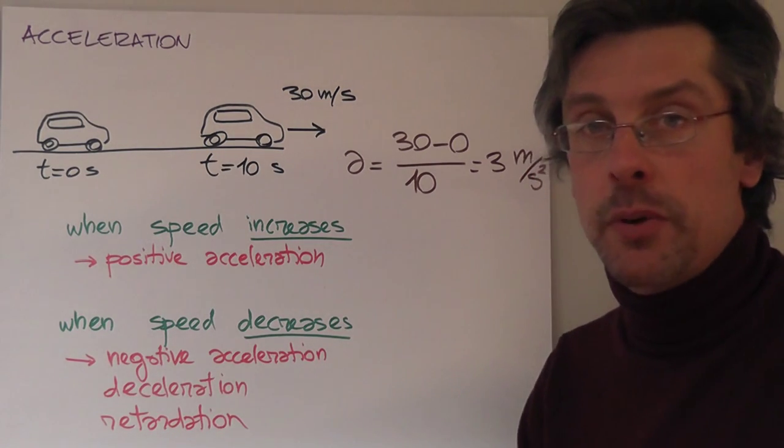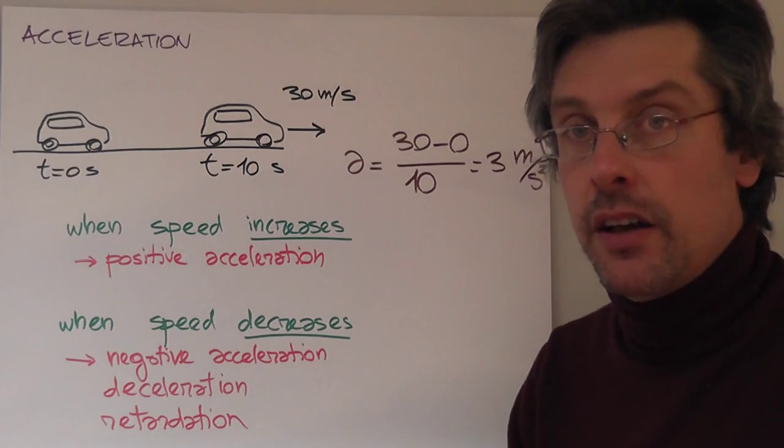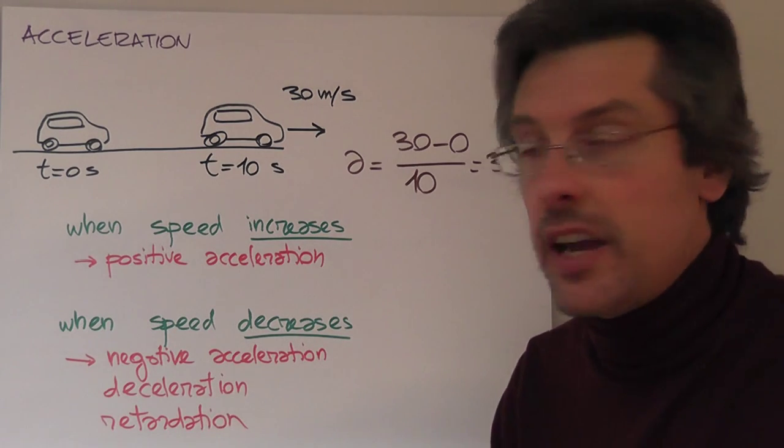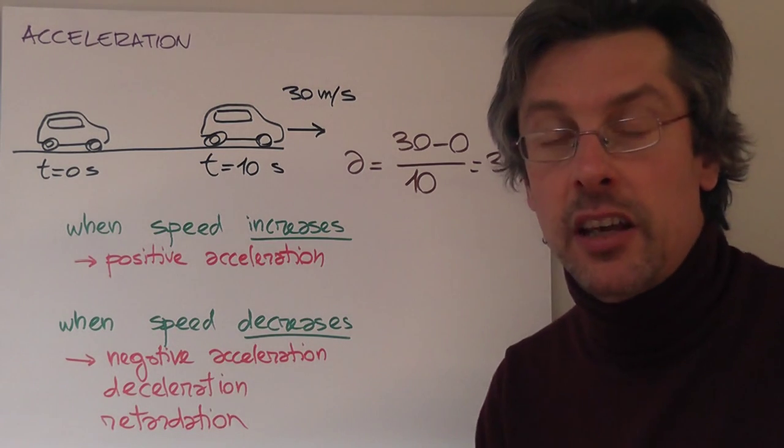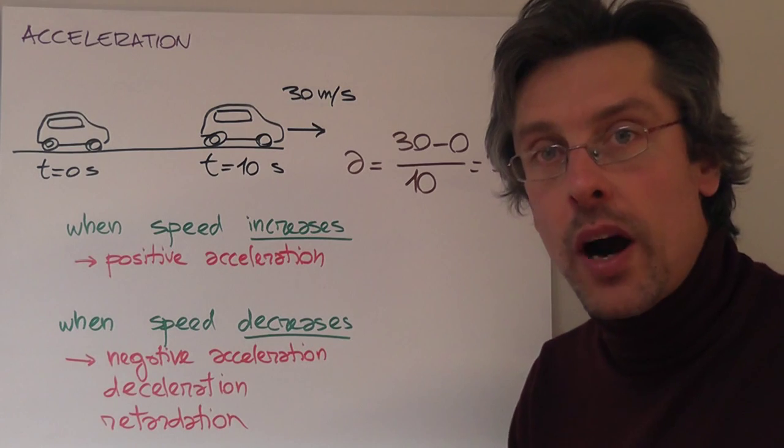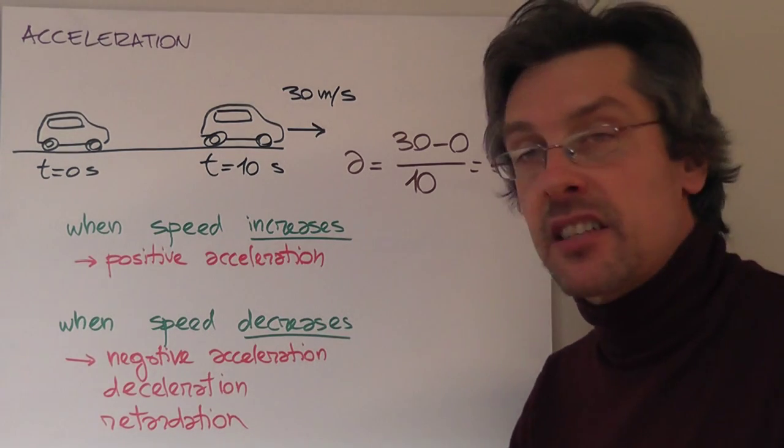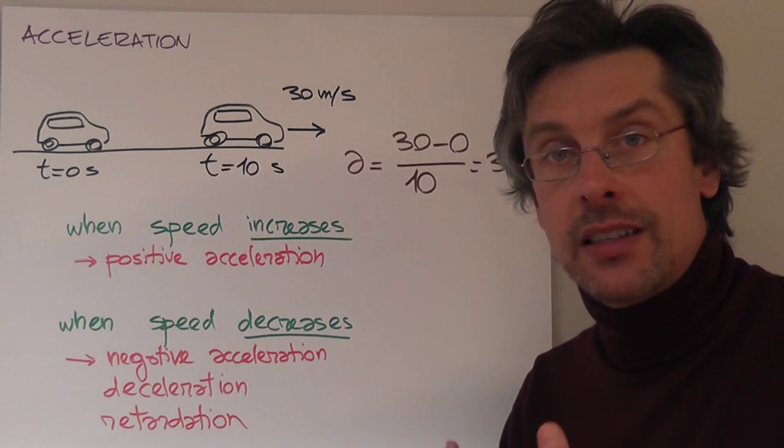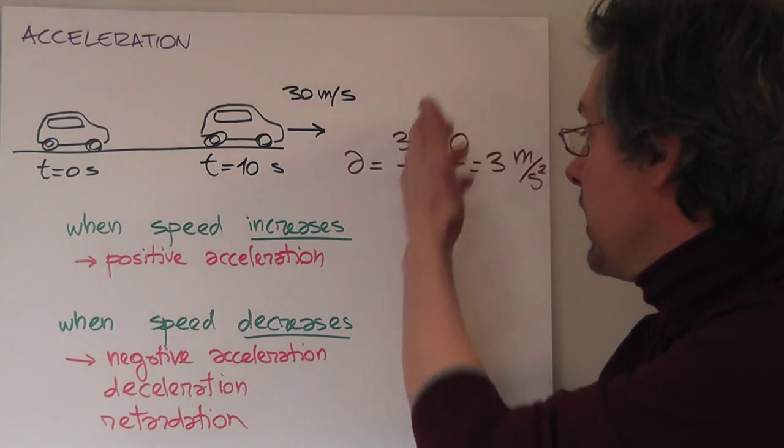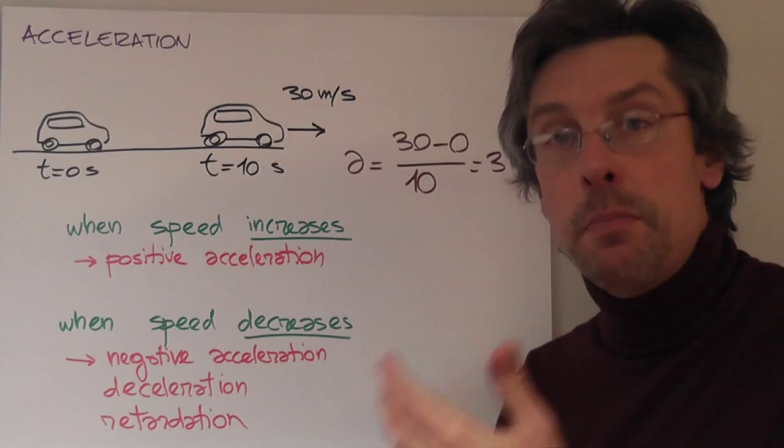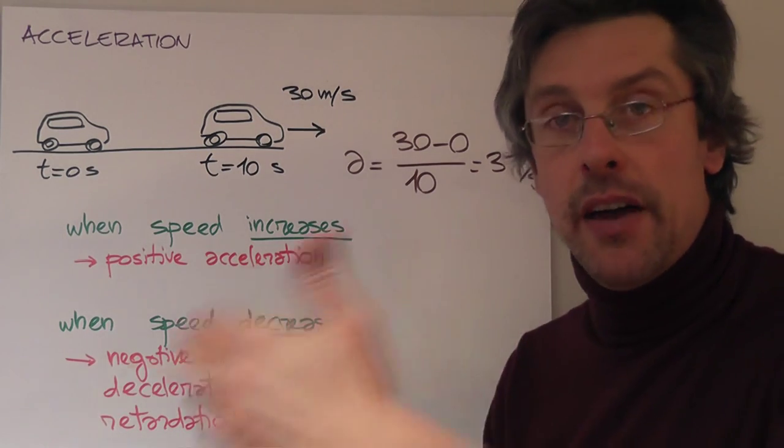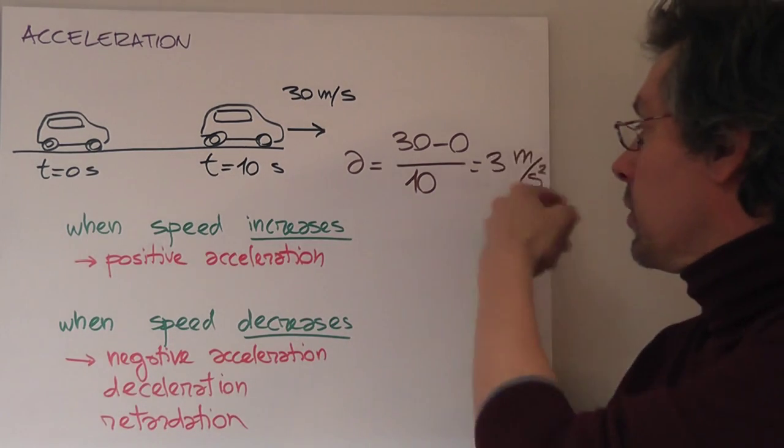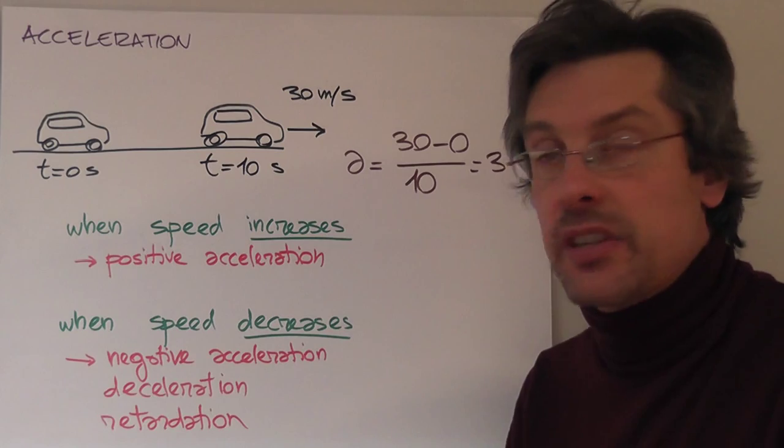And that is very peculiar because we saw that the unit for speed is meters per second. Here we have meters per second squared. And why is that? Because acceleration can be viewed as a rate of change of speed. Or in other words, it's meters per second every second, which works out as meters per second squared.